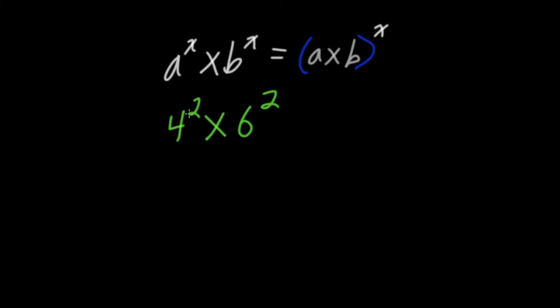So, 4 to the power of 2 times 6 to the power of 2, if we just look at this up here and apply that same concept, we have our bases multiplying by each other in the brackets, so 4 times 6, and then up the top, we have our exponent, which here is 2.